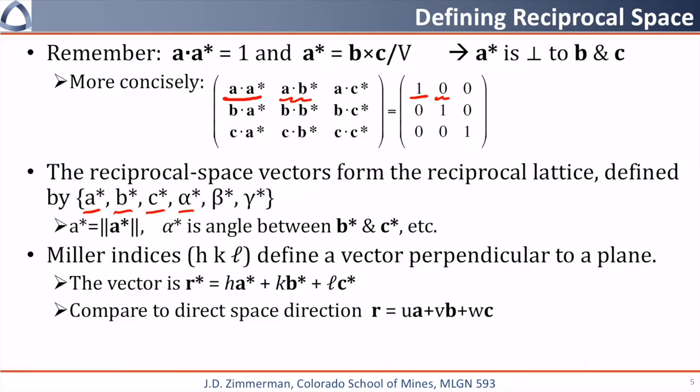Here, the vector r star will equal h times a star plus k times b star plus l times c star. We should compare this to the direct space direction, which we called r, which was just equal to u times a plus v times b plus w times c.